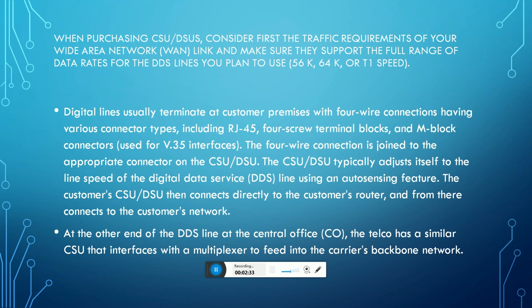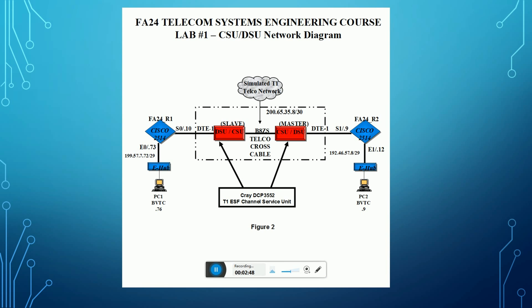The customer CSU/DSU is connected directly to the customer's router and from there to the customer's network. At the other end of the DSU line, at the Central Office CO, the telecom has a similar CSU that interfaces with the multiplexer, feeding into the carrier backbone network.